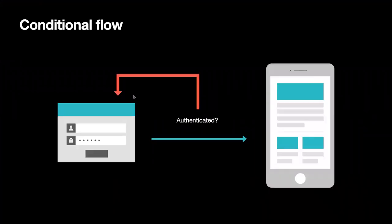Why do we need control flow in programming? Just like in real life, you have conditions and you make decisions based on those conditions. A common example is a login screen: if you're a valid, registered user, it takes you to the main screen. If you're not a valid user, you stay on the same screen and get an error message or a prompt to reset your password.